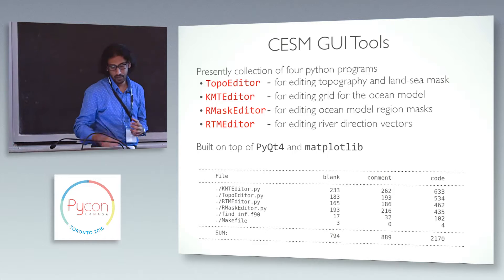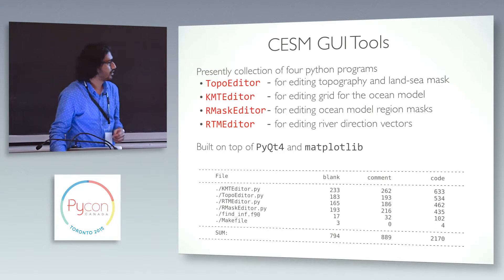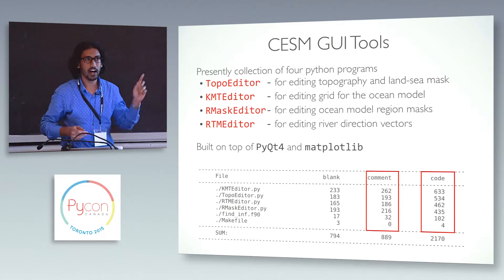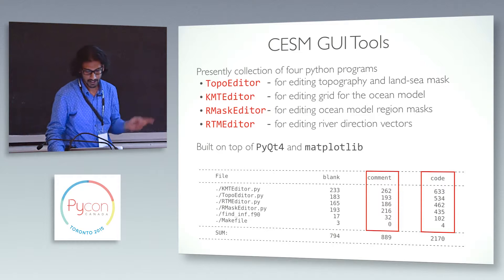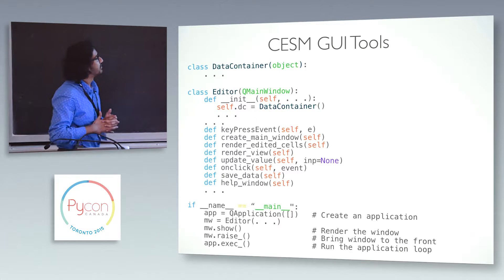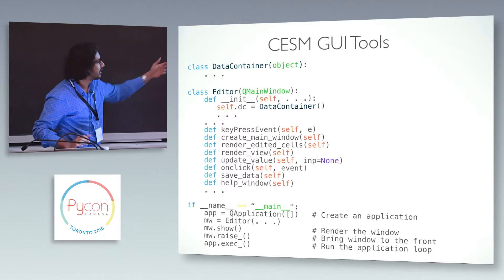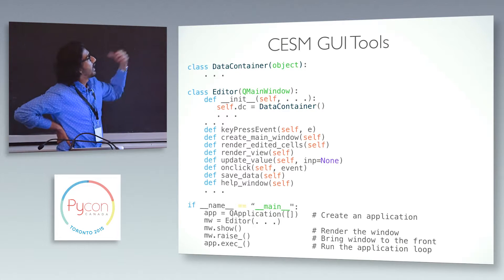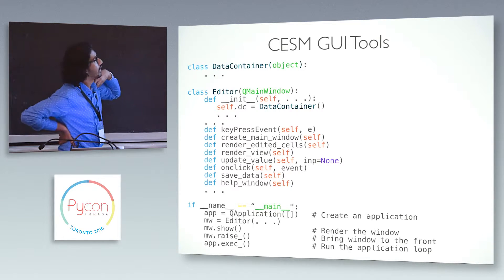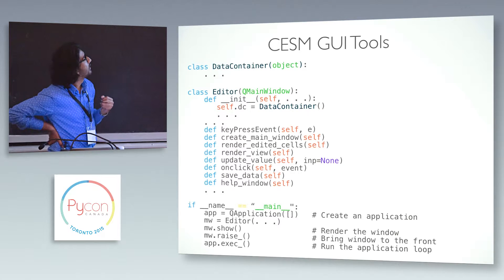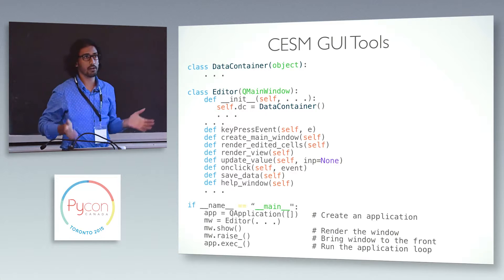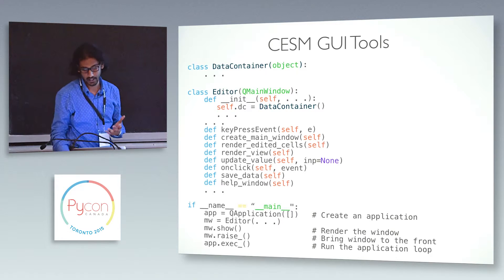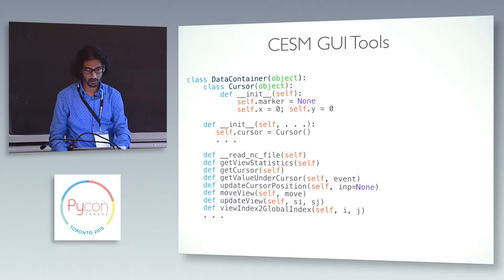This is built on PyQt and Matplotlib. As you can see from the code count, it's only a few hundred lines of code each, and you'll see that we can do a lot with it. I would like to point out the very high code-to-comment ratio — I'm quite proud of this. The general idea for all of these tools is that there is a Qt application started in the main loop. The main editor is implemented as a derived object from QMainWindow, which is a Qt widget. There is also a data container class that holds all the data, while the editor class handles all button press events, key press events, and window rendering.